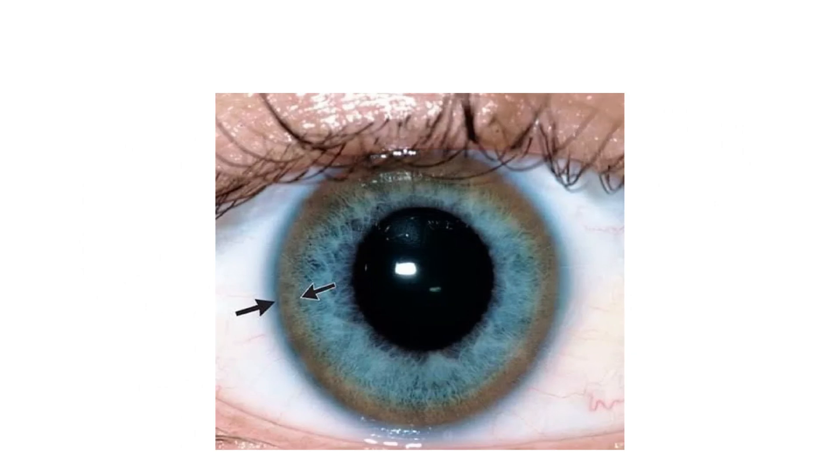A very important physical exam finding is something you see in the eye: a green, gold, or brown pigment that looks like a ring around the rim of the cornea and iris. Here is a photo of this very prominent ring. It has a special name—Kaiser-Flesher ring—and this is pathognomonic for Wilson disease.